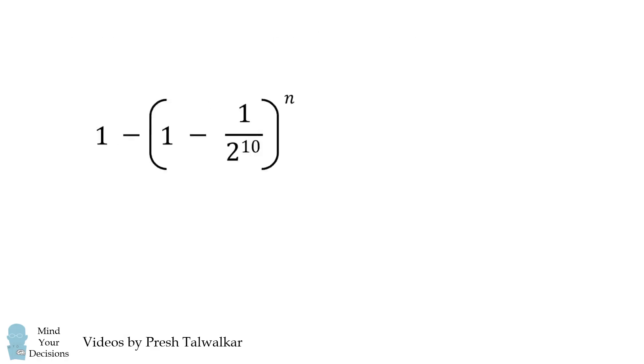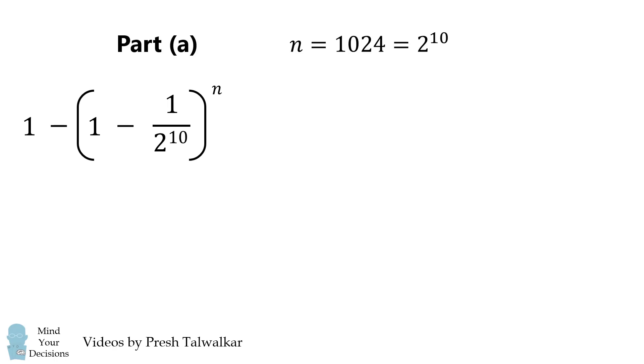We'll now use this formula to solve both parts. First, we'll set n equal to 1024, which is equal to 2 to the power of 10. We substitute this in, and we get the following formula. We can actually estimate this without a calculator. This term has the form 1 minus 1 over n, all raised to the power of n.